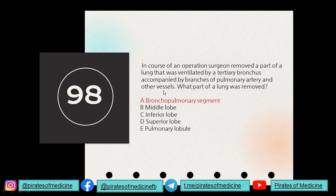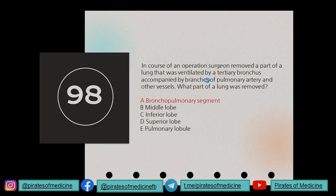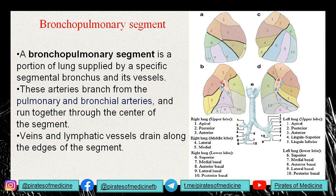Question 98: a surgeon removed the part of the lung ventilated by a tertiary bronchus, pulmonary artery branch, and other vessels — what part of the lung was removed? To understand pulmonary anatomy, the lung is divided into bronchopulmonary segments. A bronchopulmonary segment is a portion of lung supplied by a segmental bronchus and its vessels; arteries branch from the pulmonary and bronchial arteries running through the center of each segment.